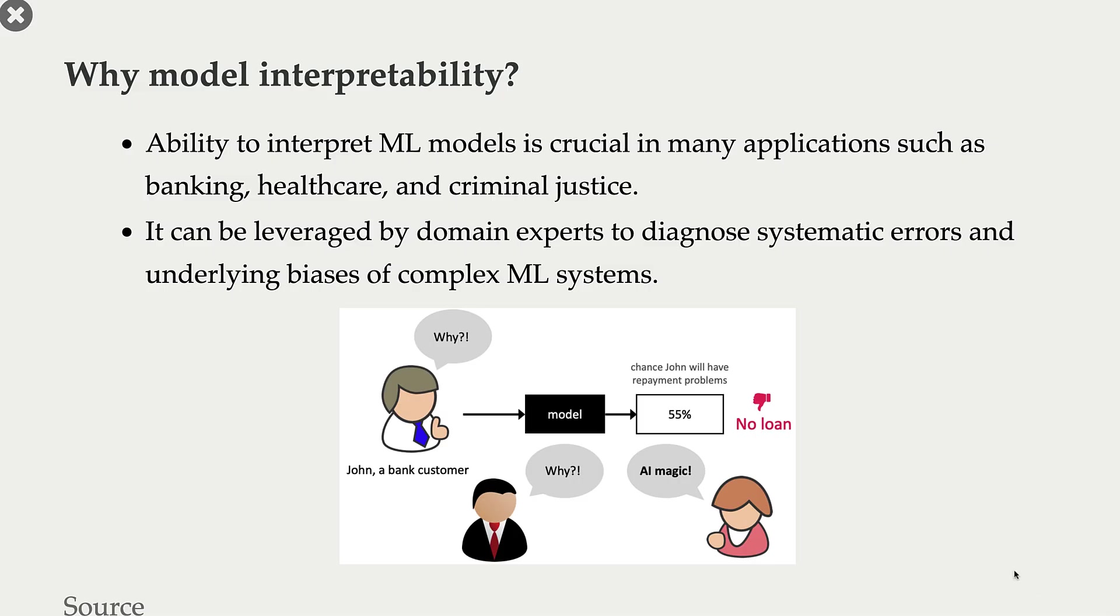In this picture I'm showing you this person John, who is a bank customer. He applies for a loan and his application is passed to this black box machine learning model. Now the model says that the chance that John will have repayment problems is 55%, and so the model's suggestion is to reject the loan. In this scenario, there is this bank manager and there is this customer.